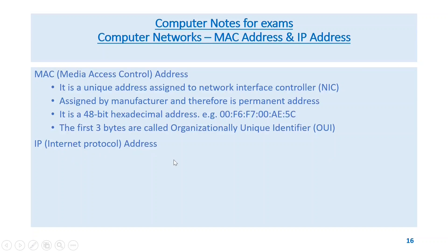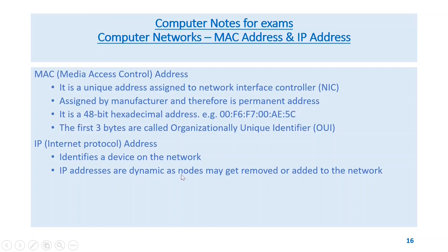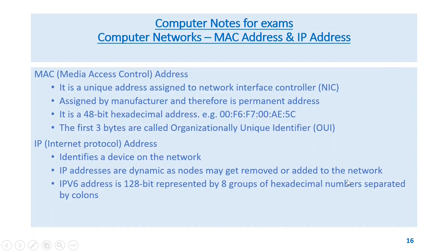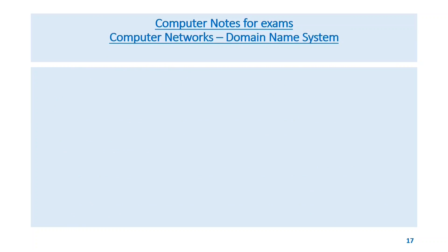IP — internet protocol — address identifies a device on the network. IP addresses are dynamic as nodes may be removed or added to the network. IPv6 address is 128-bit, represented by 8 groups of hexadecimal numbers separated by colons. IPv4 address is 32-bit, represented by 4 groups of decimal numbers separated by dots.